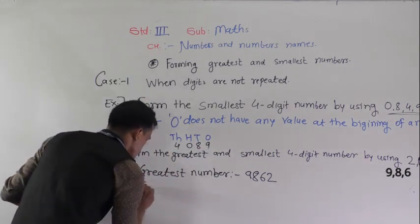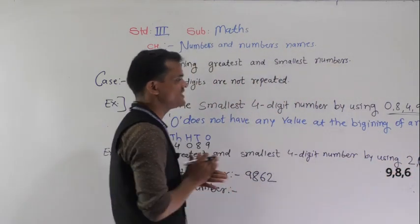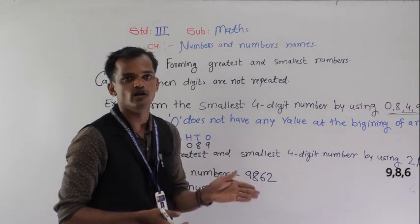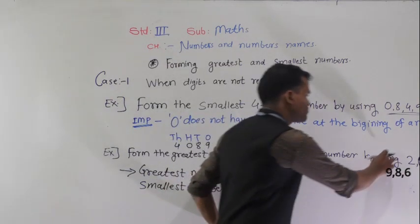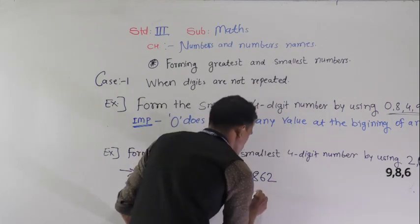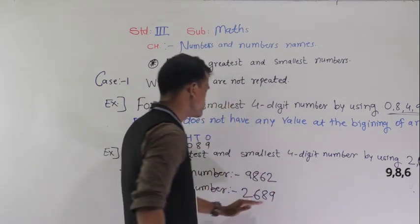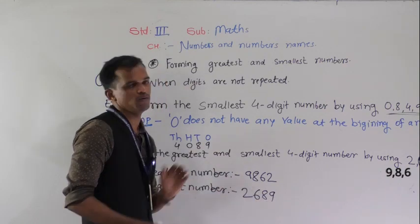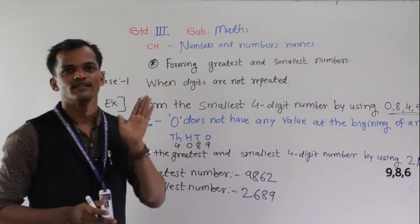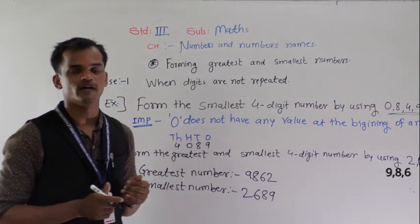Then the smallest number: to form the smallest number, place the digits into ascending order — small to big order. Which is the smallest digit here? 2. After 2: 6, then 8, then 9. So this is the smallest number formed — 2689.